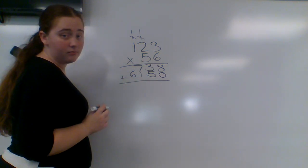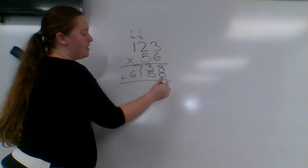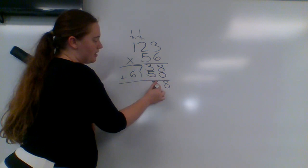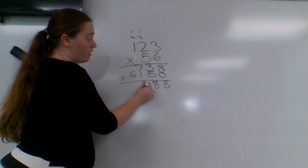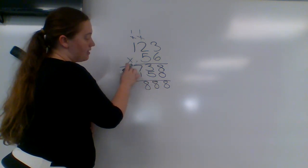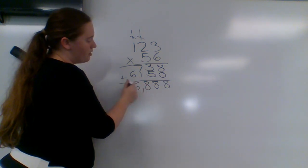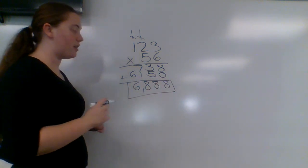And then we'll add. 0 plus 8 is 8. 3 plus 5 is 8. 7 plus 1 is 8. And 6 plus nothing is 6. So my answer is 6888.